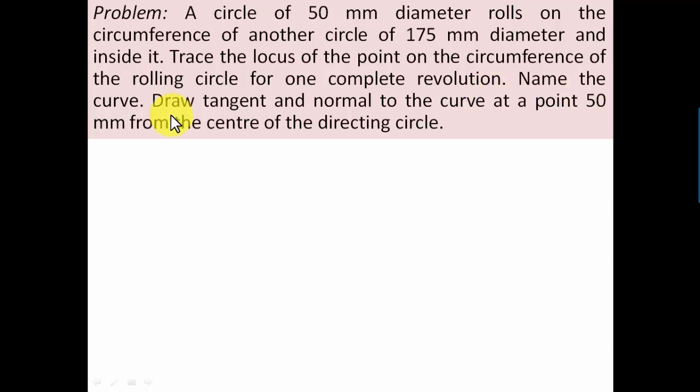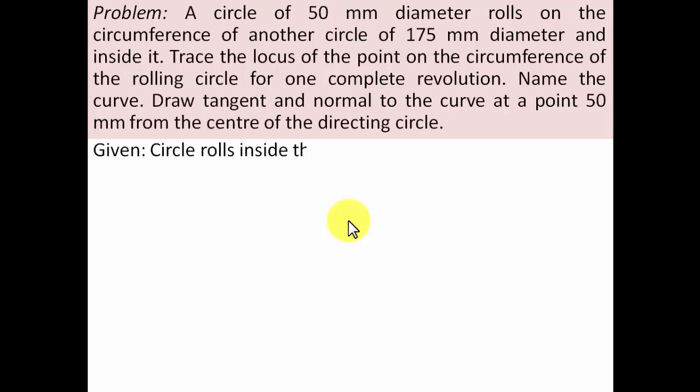Name the curve, draw tangent and normal to the curve at a point 50mm from the center of the directing circle. If you have not seen my first lecture — the introduction to cycloidal curves — I strongly recommend watching that first, as I explained how a hypocycloid is formed. Whenever a rolling circle rolls inside a directing circle, the curve generated is the hypocycloid.